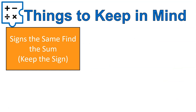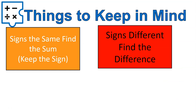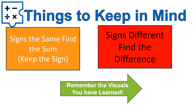A couple of things to keep in mind: if the signs are the same, find the sum. If the signs are different, find the difference. Remember the visuals you've learned — number lines, diving, money, temperature — all of those can help. But knowing the rules will help you when you don't have number lines available. I hope that video was helpful for you. As always, have a wonderful day.